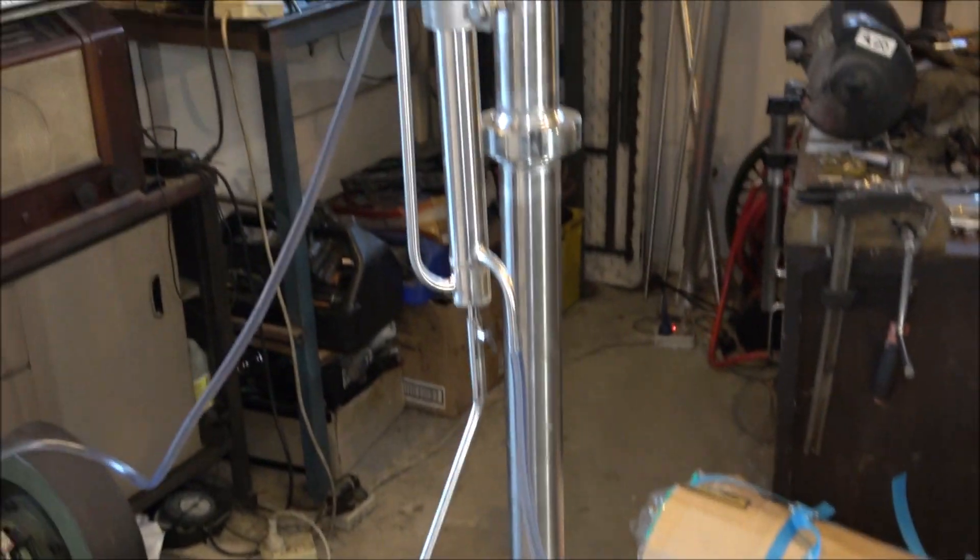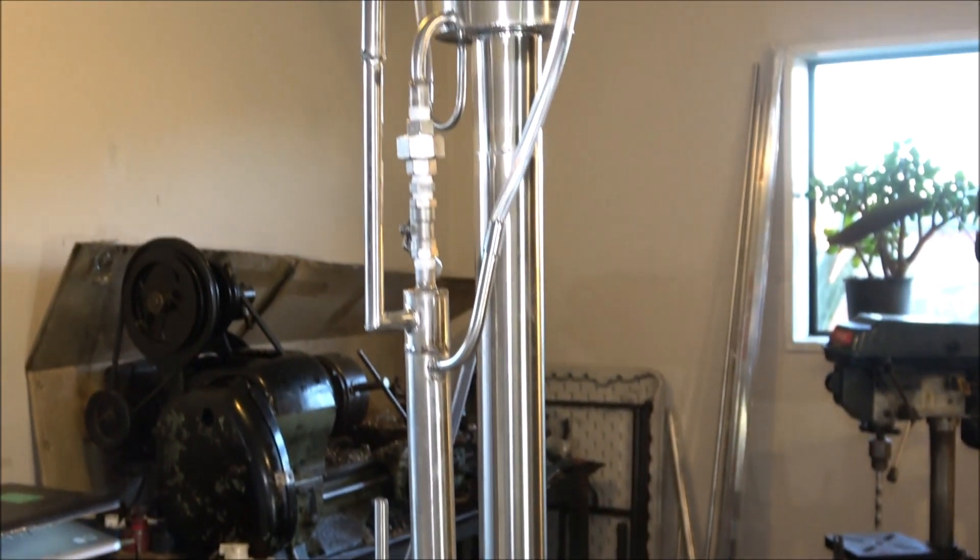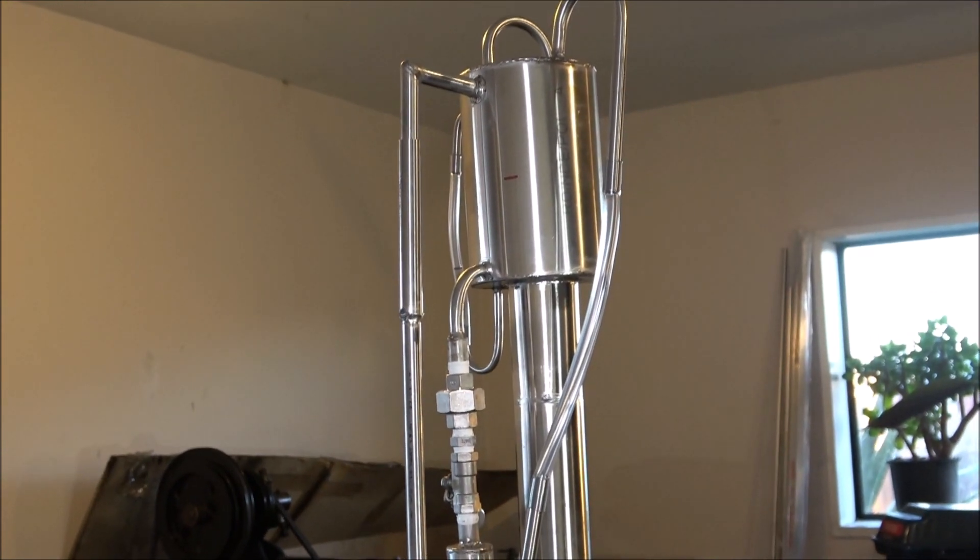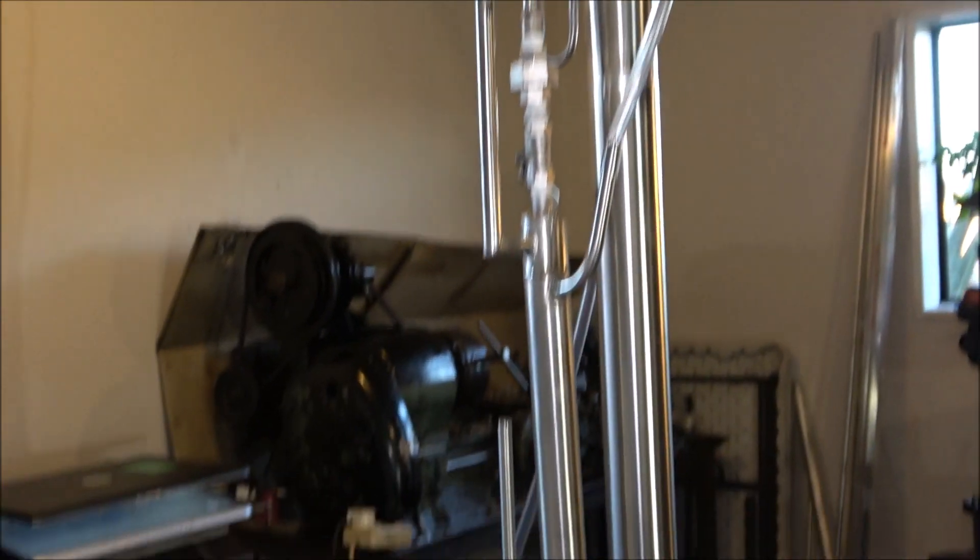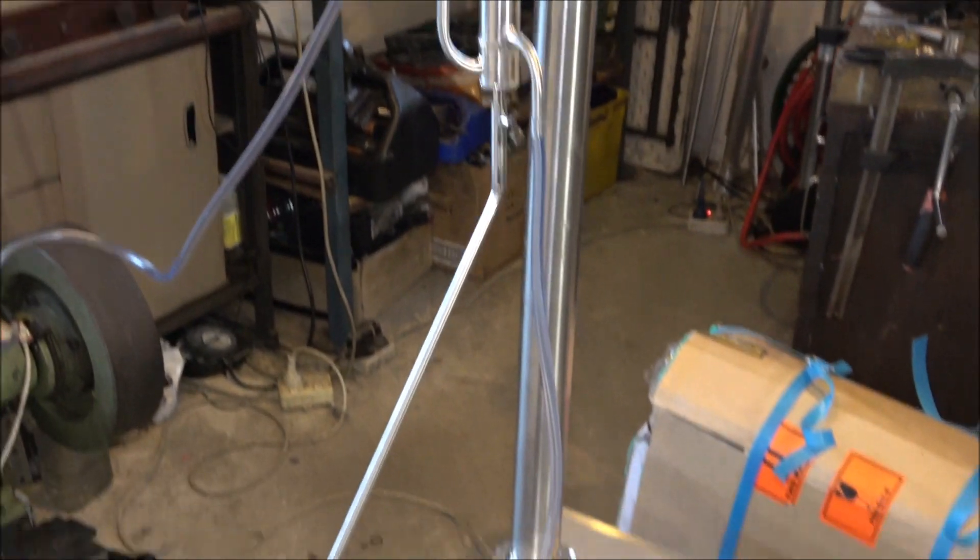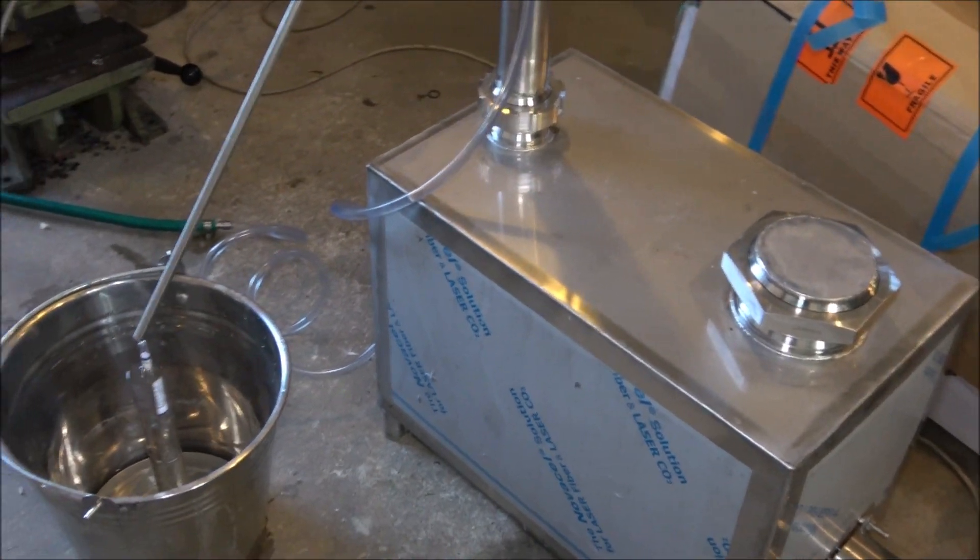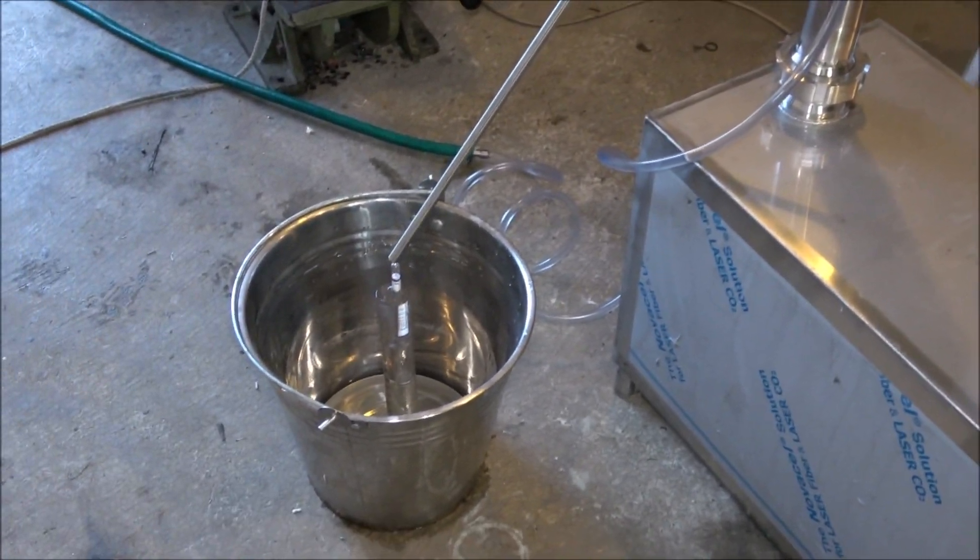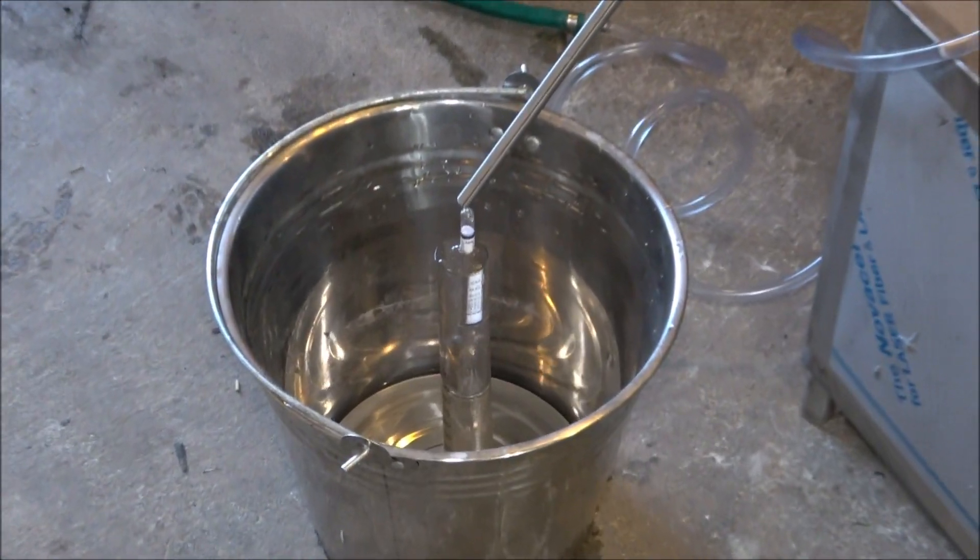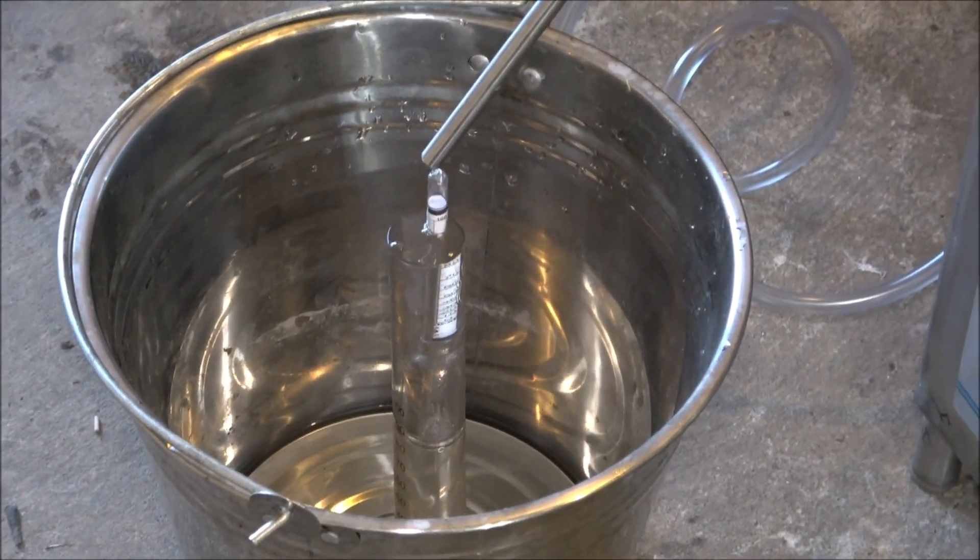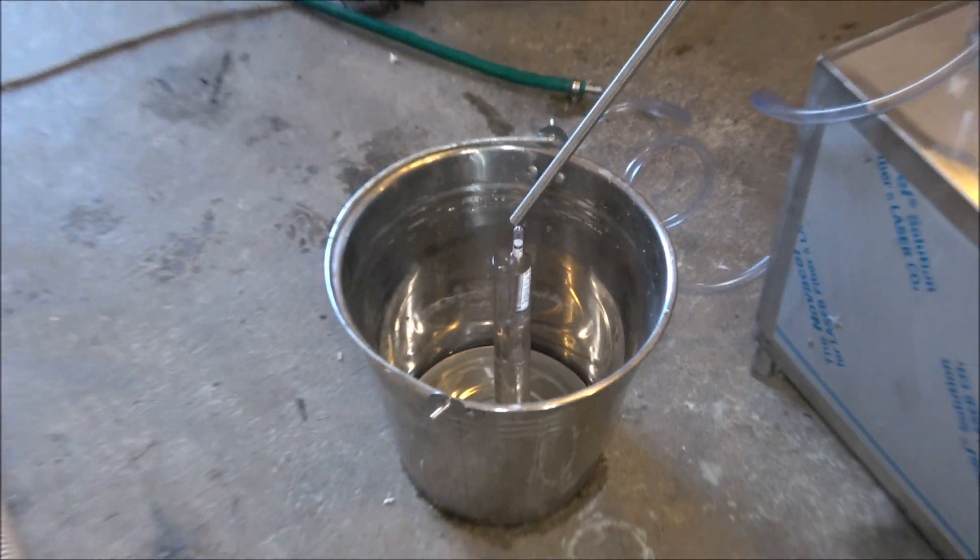And again, here's the column. Carrying on our distillation. I already made calculations. I know approximately how much you're going to get. I'm aiming, planning for about 4 liters of 95 percent alcohol. We'll see.